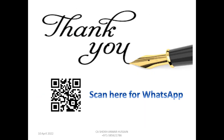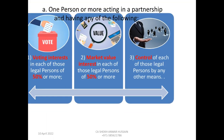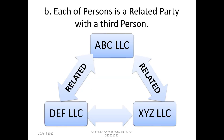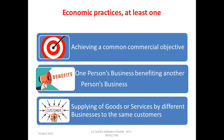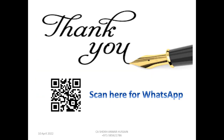Here we come to the end — the crux of this video. First, there is Clause 1, which says if any one of its conditions is satisfied, the case is concluded and they can form a tax group. If those conditions are not satisfied, we go to point (b) — related through a third person. If that condition is also not satisfied, we go to Clause 2, where all three conditions — economic, financial, and regulatory — must be fulfilled, but for each condition only one of its sub-aspects needs to be satisfied. Then they can form a tax group.